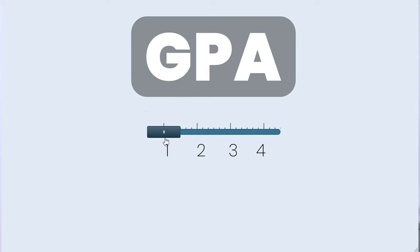For most US universities, a GPA requirement of 3 out of 4 is the minimum passing grade. If you have passed all your subjects without too many backlogs, you will likely have a GPA of over 3 on a scale of 4. So don't worry too much — you can still apply without fear.